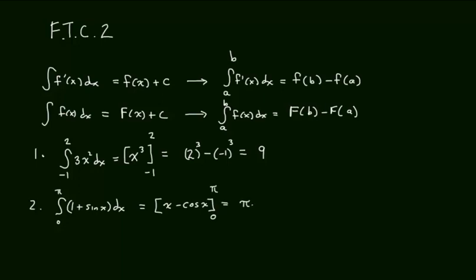So, then I have pi minus the cosine of pi minus 0 minus the cosine of 0. That, of course, is going to give me pi minus a negative 1, so pi plus 1, minus a minus plus cosine of 0 is 1. So, in the end, this comes out to be pi plus 2.